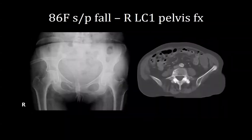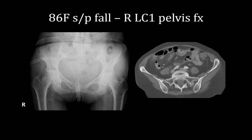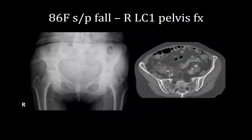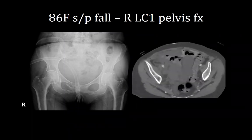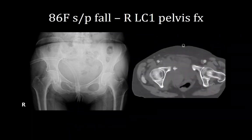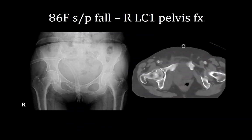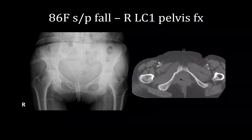The next patient is an 86-year-old female who fell from standing and was found to have a right LC1 pelvis fracture. She was made protected weight bearing as tolerated with a walker and placed on DVT prophylaxis.